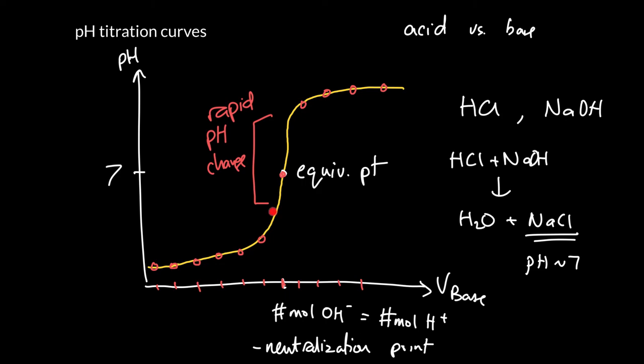Well, if you pick your indicator right, it can change color as it passes through the equivalence point. And where we see that color change of an indicator, we call this the end point. So the end point tells us where there's a color change of an indicator. And if we pick the indicator correctly, the end point, the point where it changes color, corresponds very closely to the equivalence point.